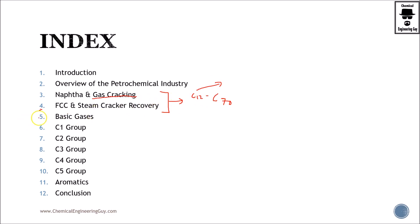Then we start analyzing by groups. We'll see the basic gases — for instance, syngas, carbon monoxide, carbon dioxide — how they are produced, how we produce hydrogen gas, and so on. Then we get to the hydrocarbon part, which is the most important part of the petrochemical industry. C1 will be methane, along with the carbon hydrocarbons: carbon monoxide and carbon dioxide.